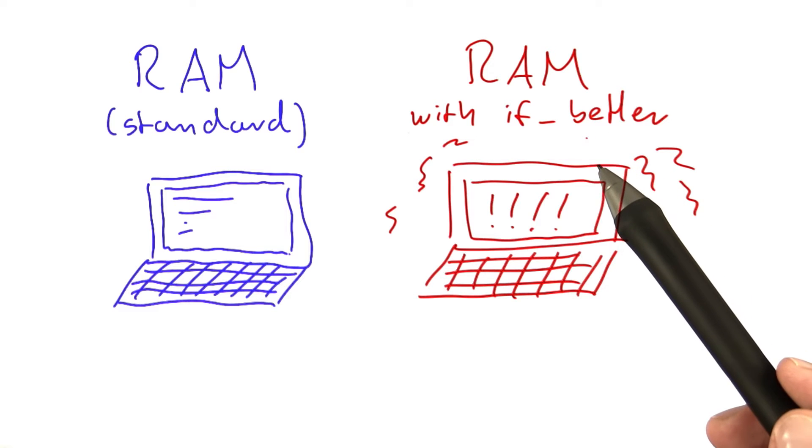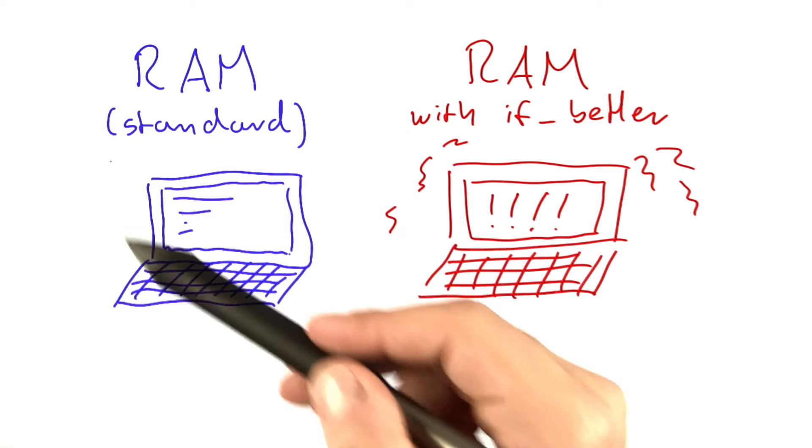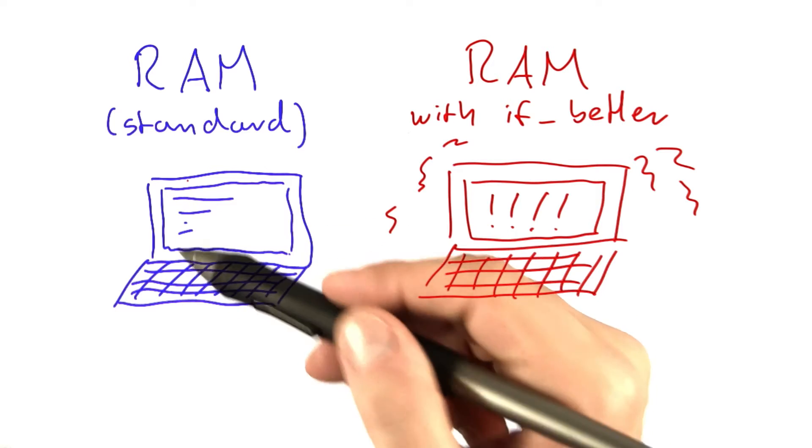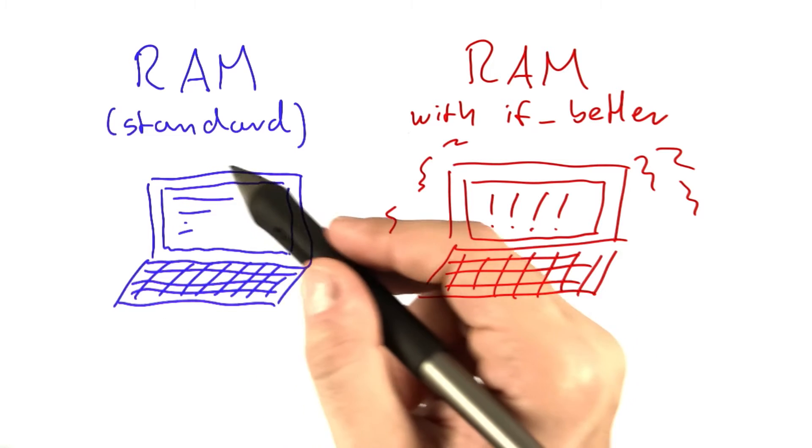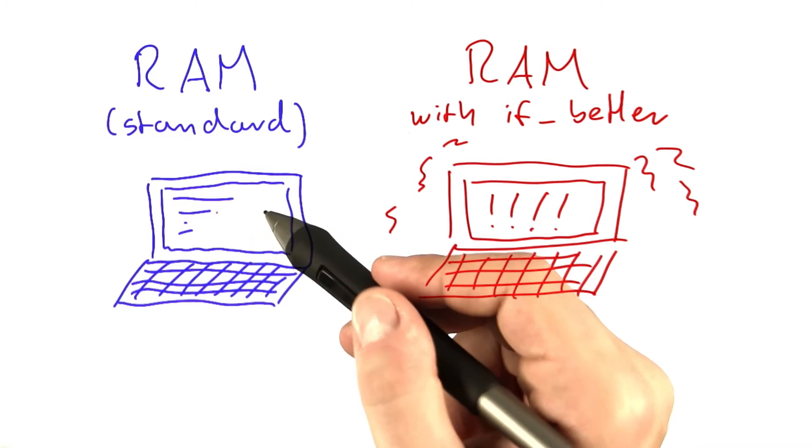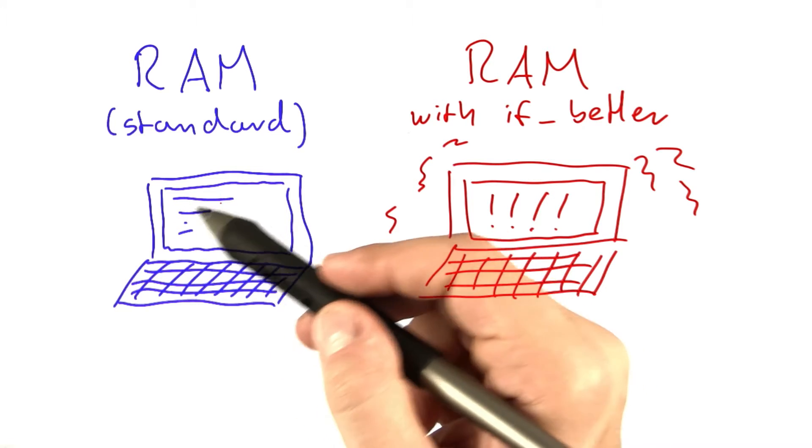So that's basically the difference between the two machines, because here on the standard RAM it's very clear what each of the functions does. Actually, if you know what the machine is currently doing, then you can always predict what it will do next because for every instruction it's very clear what it does given certain variables or inputs.